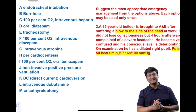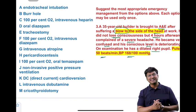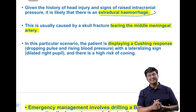The third emergency: a 35-year-old builder is brought to A&E after a blow to the side of his head. He did not lose consciousness initially, but four hours later complained of severe headache, became very confused, and his conscious level deteriorated. On examination he has a dilated right pupil, pulse rate of 50 beats per minute, and blood pressure of 168/100 mmHg. This is a case of head injury with raised intracranial pressure, and the lucid interval followed by deterioration is suggestive of extradural hemorrhage.